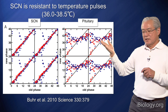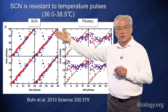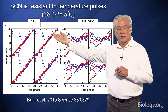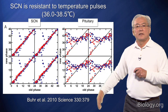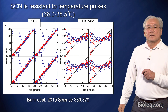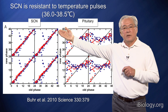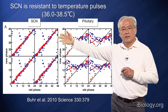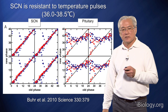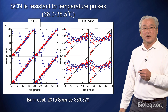But surprisingly, when we look at the suprachiasmatic nucleus under the same conditions, those data are all type one, or very weak resetting. So the SCN is resistant to temperature resetting pulses.